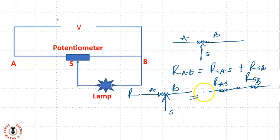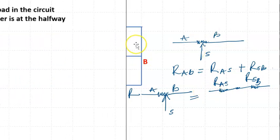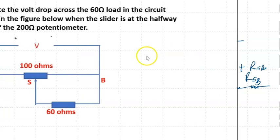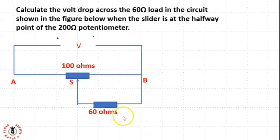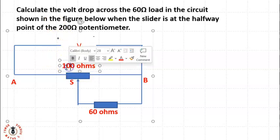Now let's see an example that further explains it better. Calculate the voltage drop across the 60 ohm load in the circuit shown in the figure below when the slider is at the halfway point of the 200 ohm potentiometer. I drew this as 100 ohms but it's 200 ohms.